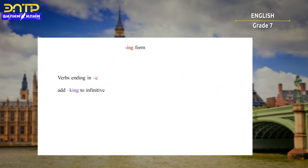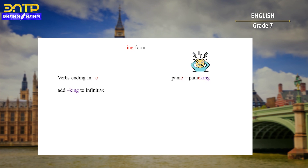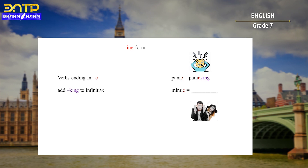Verbs ending in C will need the ending K-ING at the end. For example, 'panic' — the ending is C, so we add K-ING to get 'panicking'. 'Mimic' will become 'mimicking'.